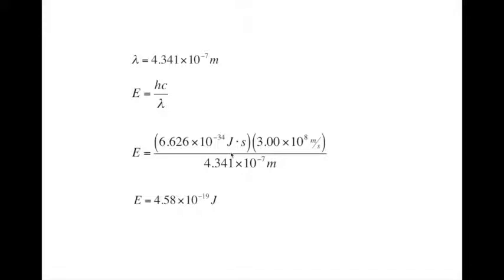So plug in our Planck's constant, speed of light divided by our wavelength, we get an energy of 4.58 times 10 to the negative 19 joules.